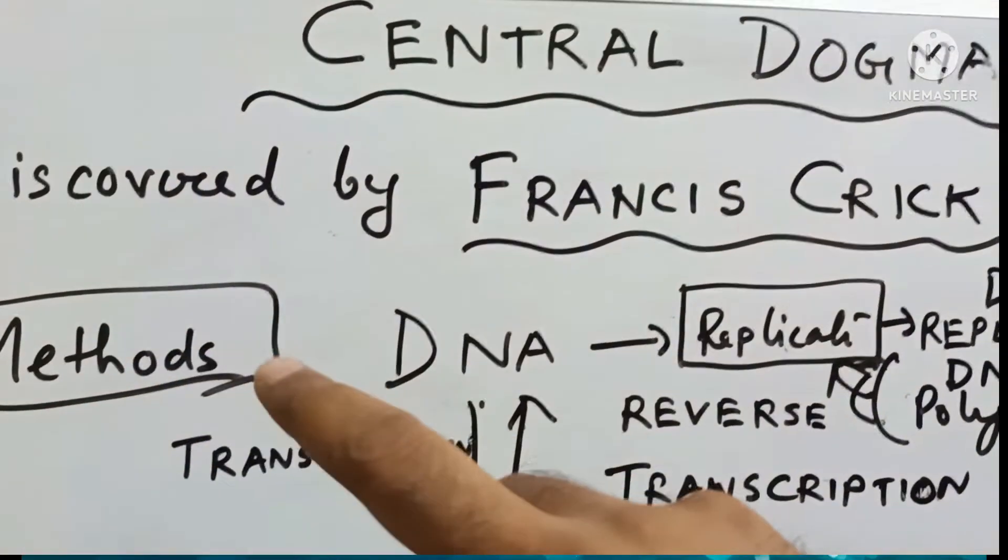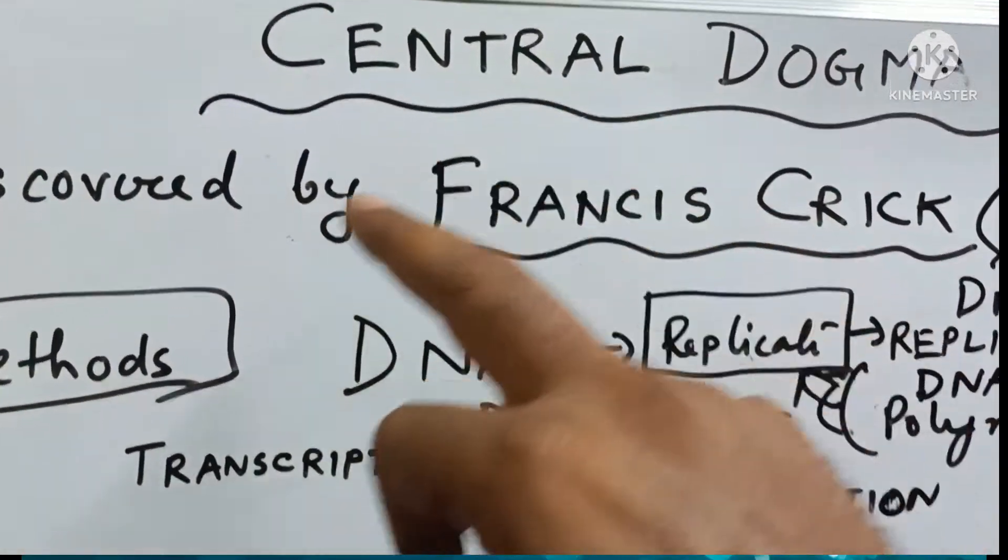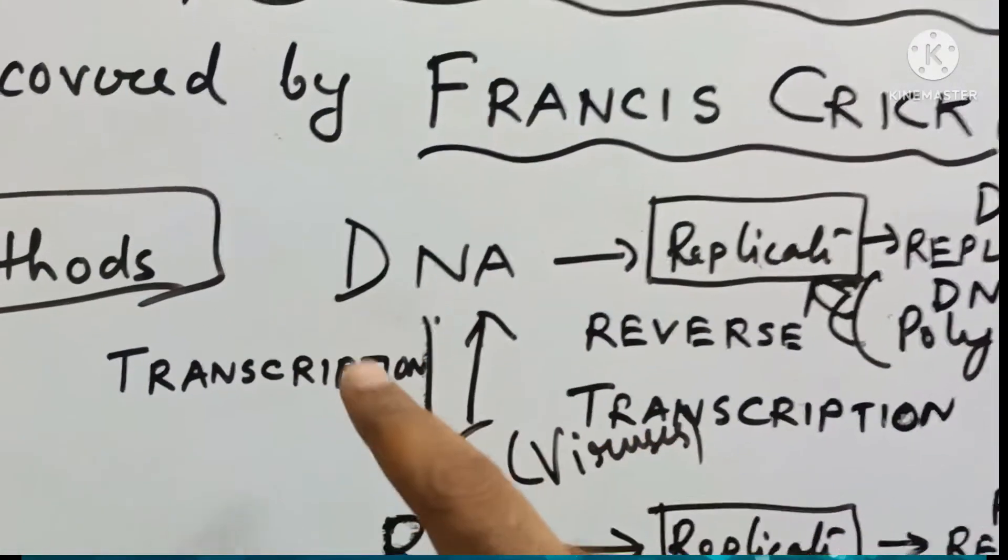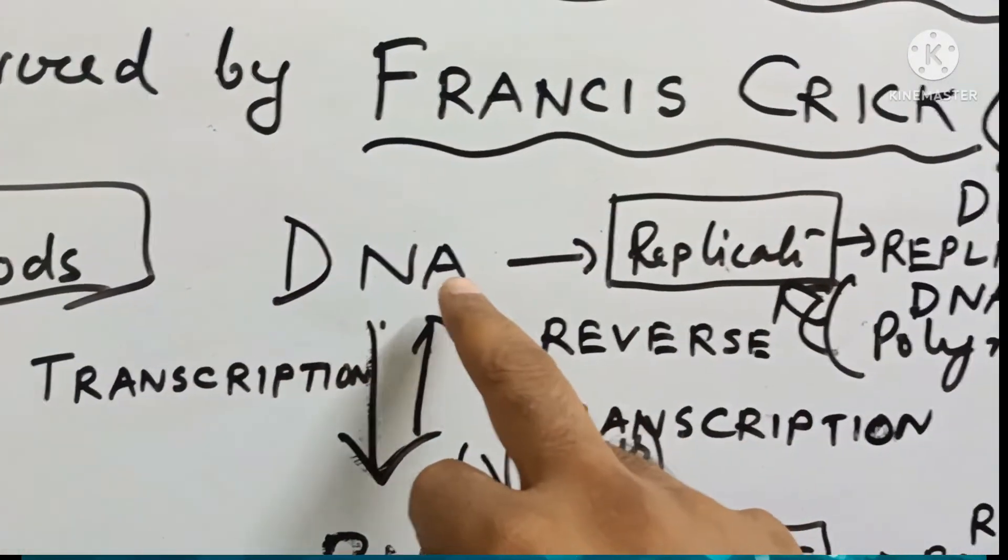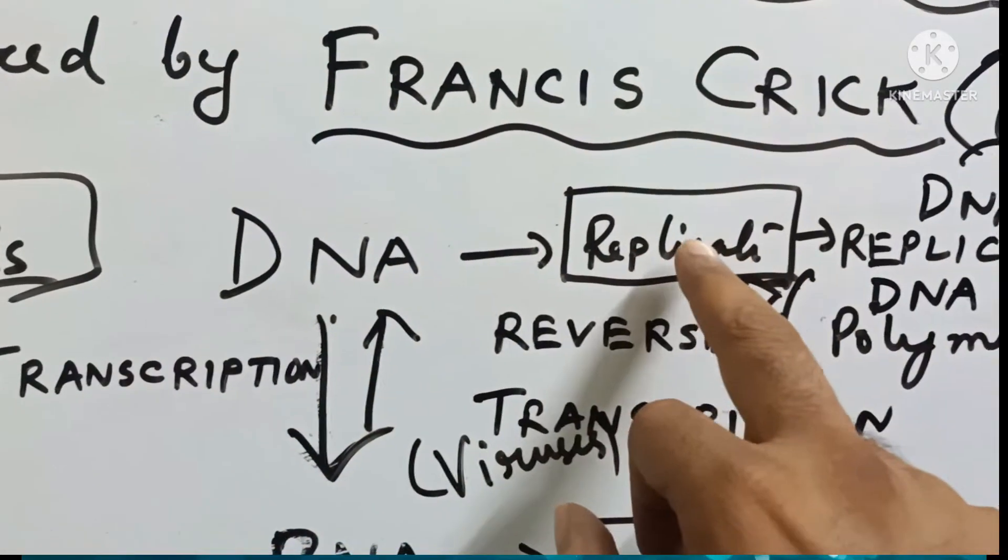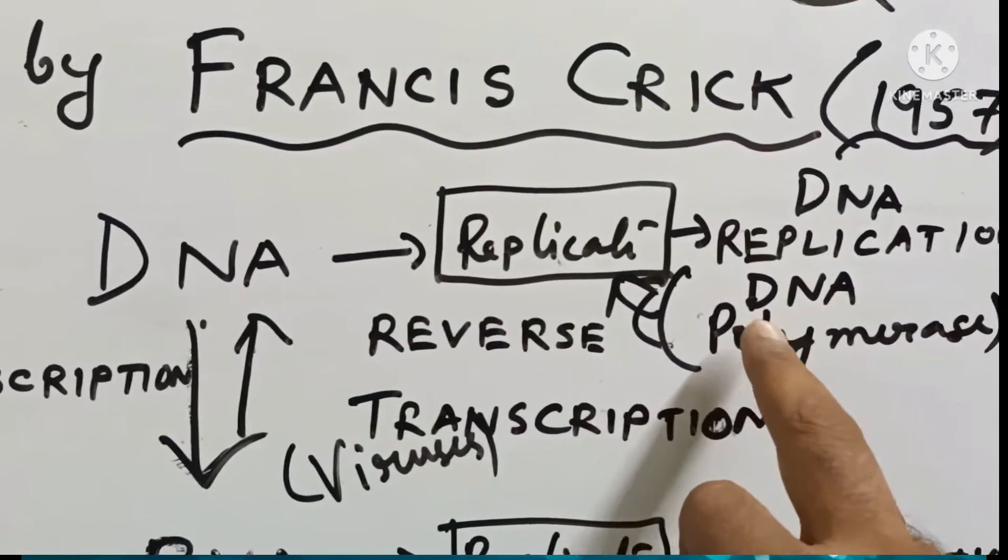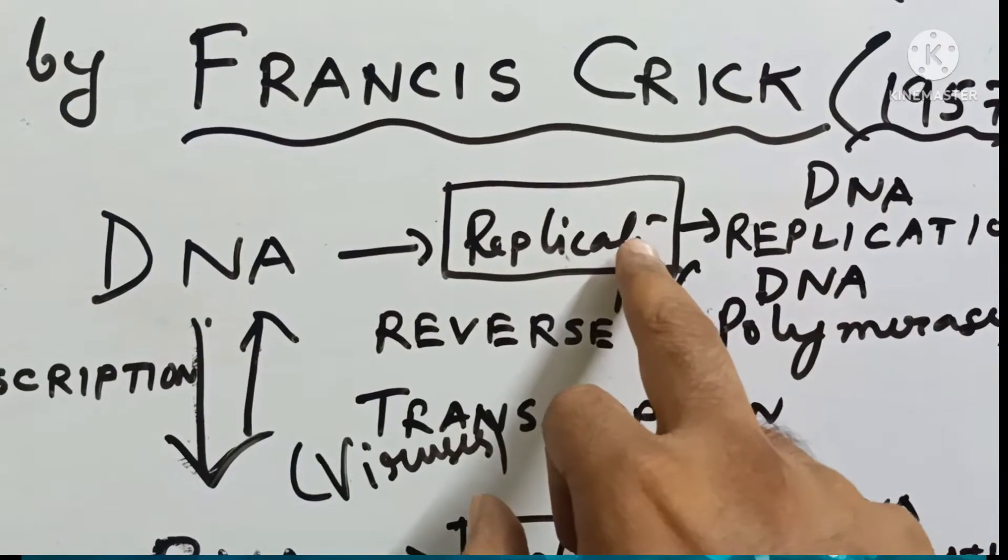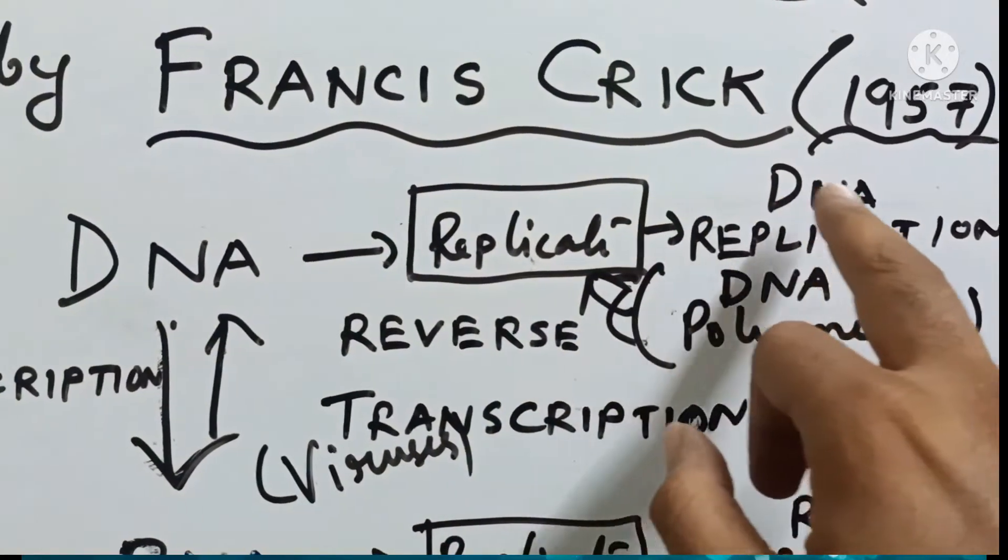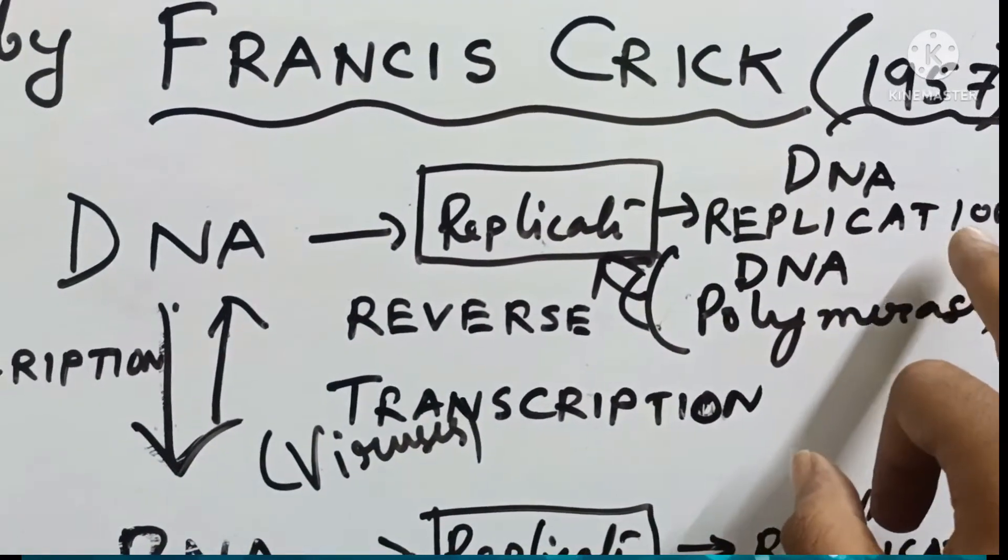What are the methods involved in this process? First of all, DNA replicates with the help of enzyme DNA polymerase and this process is known as DNA replication.